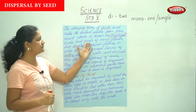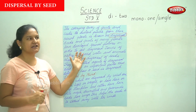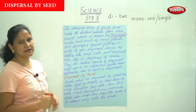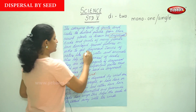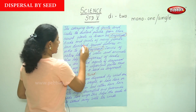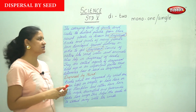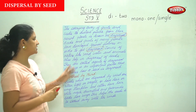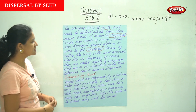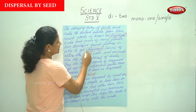Seeds and fruits of many plants have developed features in order to get dispersed. We see that the seeds and fruits have different features, and they have developed special features in order to get dispersed.